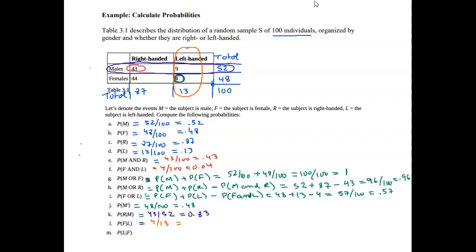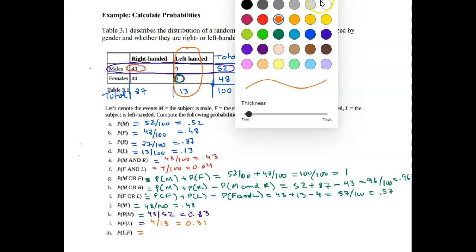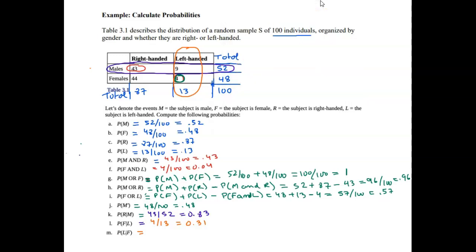That gives us approximately 0.31. Finally, the probability of picking a left-handed person out of all the females: the sample space is the 48 females, and 4 of them are left-handed, so 4 divided by 48 equals 1 over 12, which is approximately 0.083 repeating. These examples cover single probabilities, AND/OR probabilities, complements, and conditional probabilities from a contingency table.